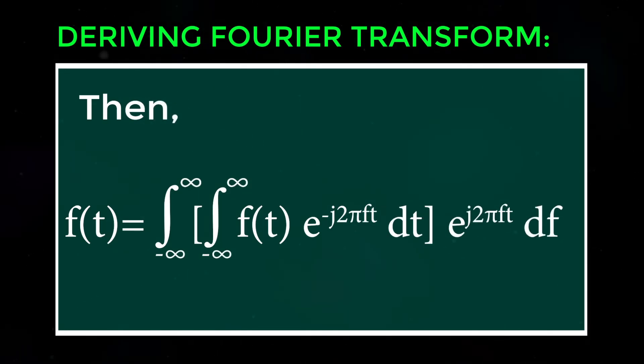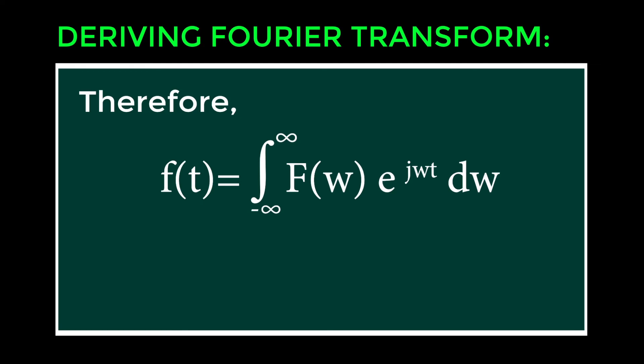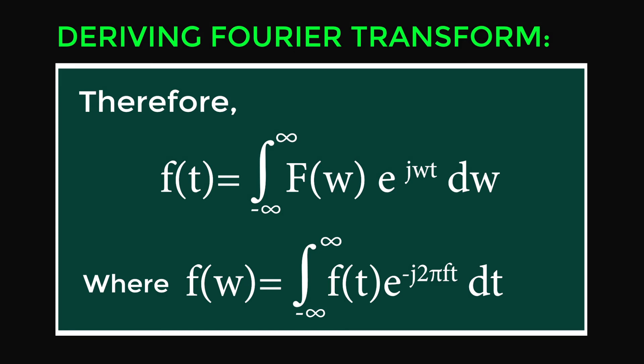Therefore, f(t) = ∫ (-∞ to ∞) of [∫ (-∞ to ∞) of f(t) · exp(-j·2π·f·t) dt] · exp(j·2π·f·t) df. This gives f(t) = ∫ (-∞ to ∞) of F(ω) · exp(j·ω·t) dω, where F(ω) = ∫ (-∞ to ∞) of f(t) · exp(-j·2π·f·t) dt.